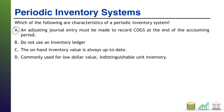B: do not use an inventory ledger — is that a characteristic of a periodic system? Well, that's not true. They do use an inventory ledger; they just use it differently than a perpetual system. A perpetual system hits the ledger with every transaction, whereas a periodic system hits the ledger at the end of the period when the balance gets updated, but it still uses it.